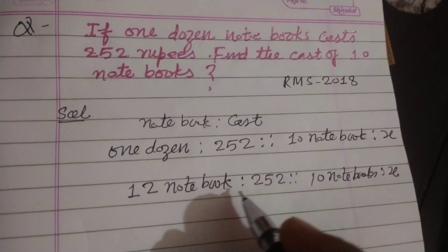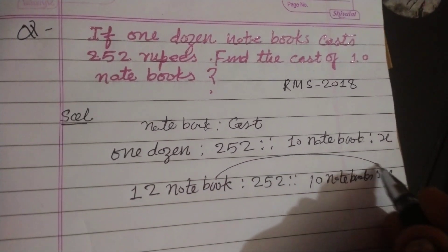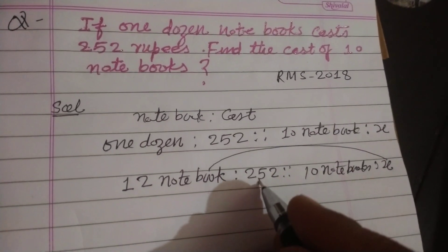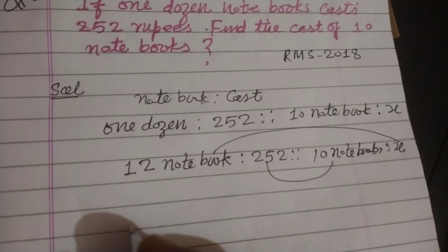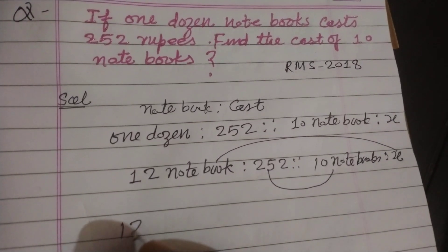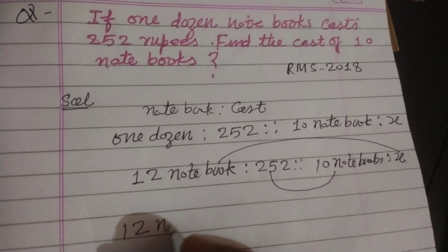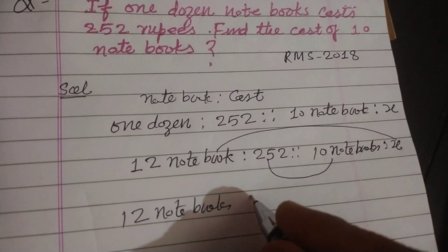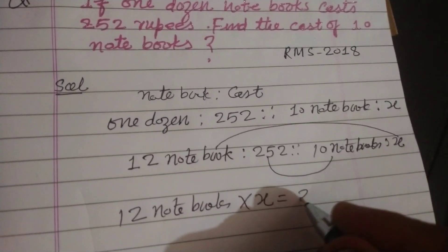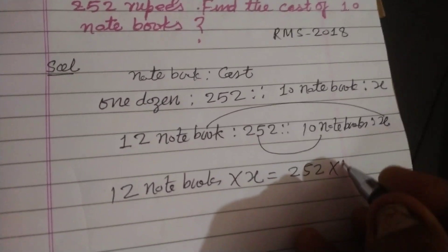And in proportion, the extreme multiplication is equal to means. So we multiply 12 notebooks into x equal to 252 into 10.